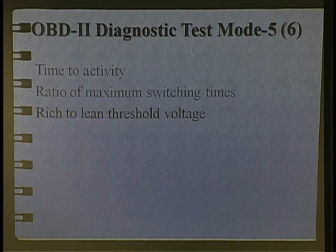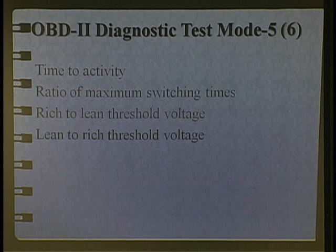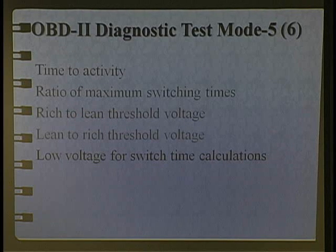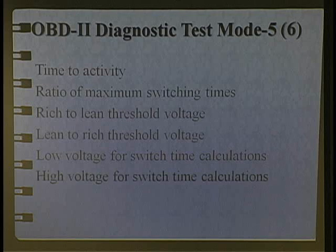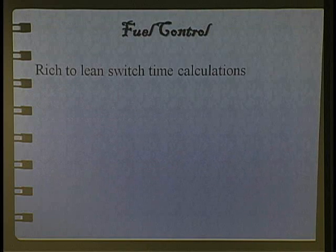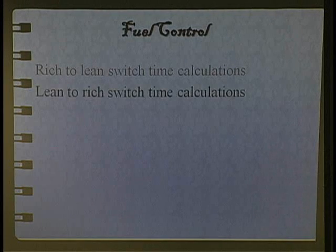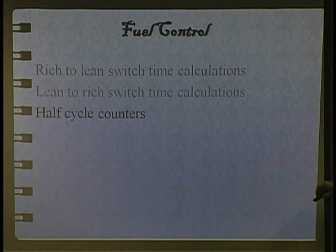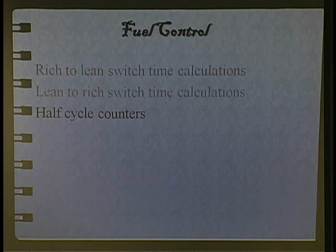Rich to lean threshold — I think I know what that is. The opposite. Low voltage for switch time calculated. That sounds confusing. High voltage — I know what that is, that's the opposite of that. This is Mode 5/6: rich to lean switch time calculations, lean to rich switch time calculated. Half cycle count — I don't know if I could live if I didn't know what the half cycle was.